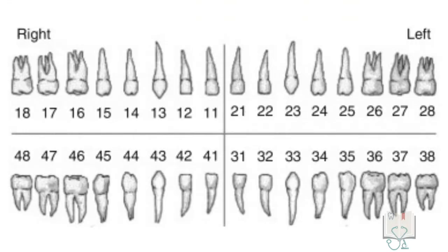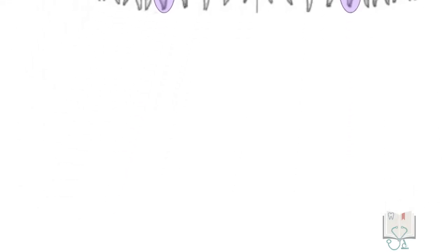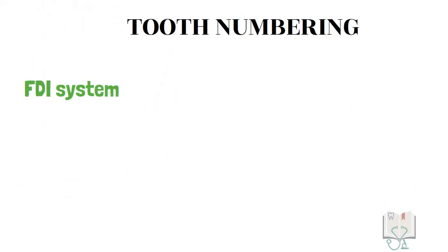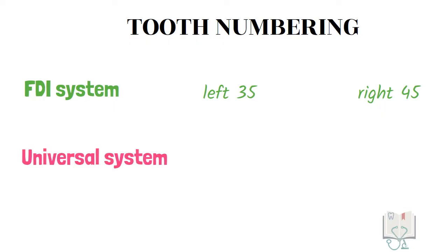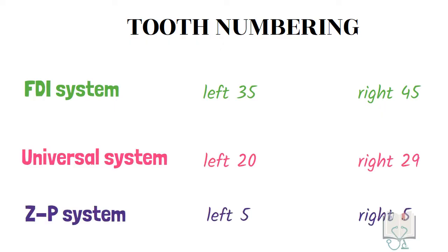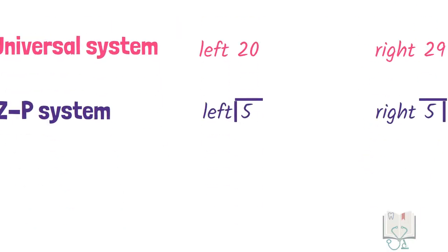Mandibular second premolar is the fifth tooth from the midline. Its tooth number in the FDI system is 35 and 45. In the Universal system it is 20 and 29, and in the Zsygmondy-Palmer system it is 5 with appropriate quadrant brackets.